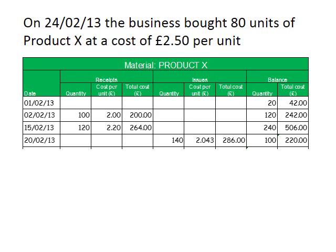Our next transaction is a purchase of a further 80 units of Product X, this time at £2.50 per unit. We record the date — 24th of February — the 80 units received, the cost per unit of £2.50, and the overall cost of purchasing those 80 units: £200. As we had 100 units before this transaction, we now have 180 units. The total cost is the £220 from before plus the £200 for this recent purchase, giving us a total cost of £420.